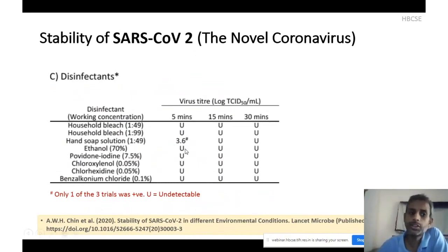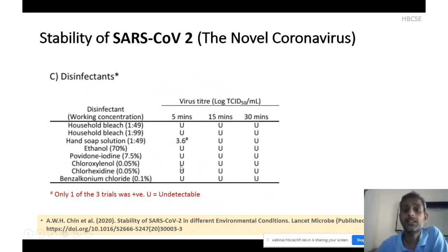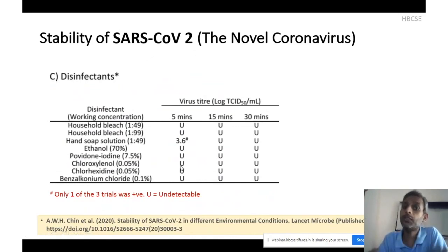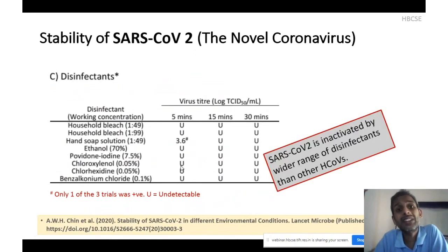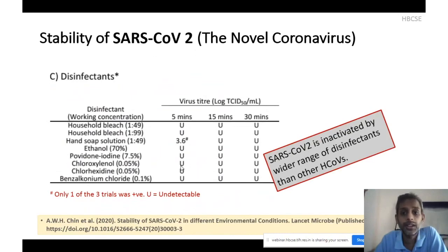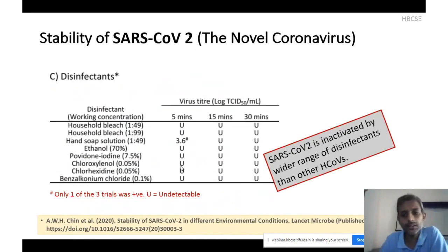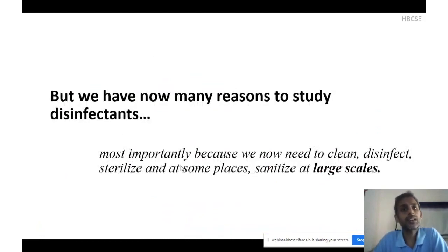70% ethanol solution, povidone-iodine solution, and interestingly chloroxylenol, chlorhexidine, and benzalkonium chloride solutions were also effective in inactivating this virus — important because these substances were relatively ineffective for SARS-CoV-1. This shows SARS-CoV-2 is inactivated by a wider range of disinfectants compared to earlier known human coronaviruses. This is good news in a way — we have a wider range of disinfectants that can inactivate the novel coronavirus.